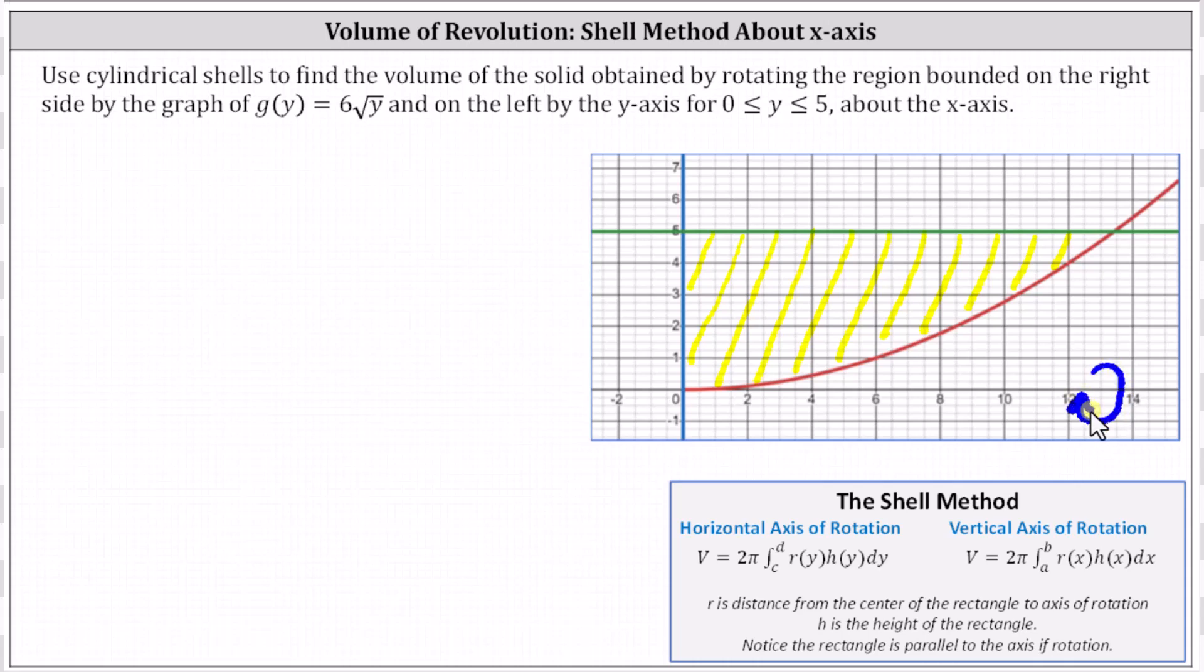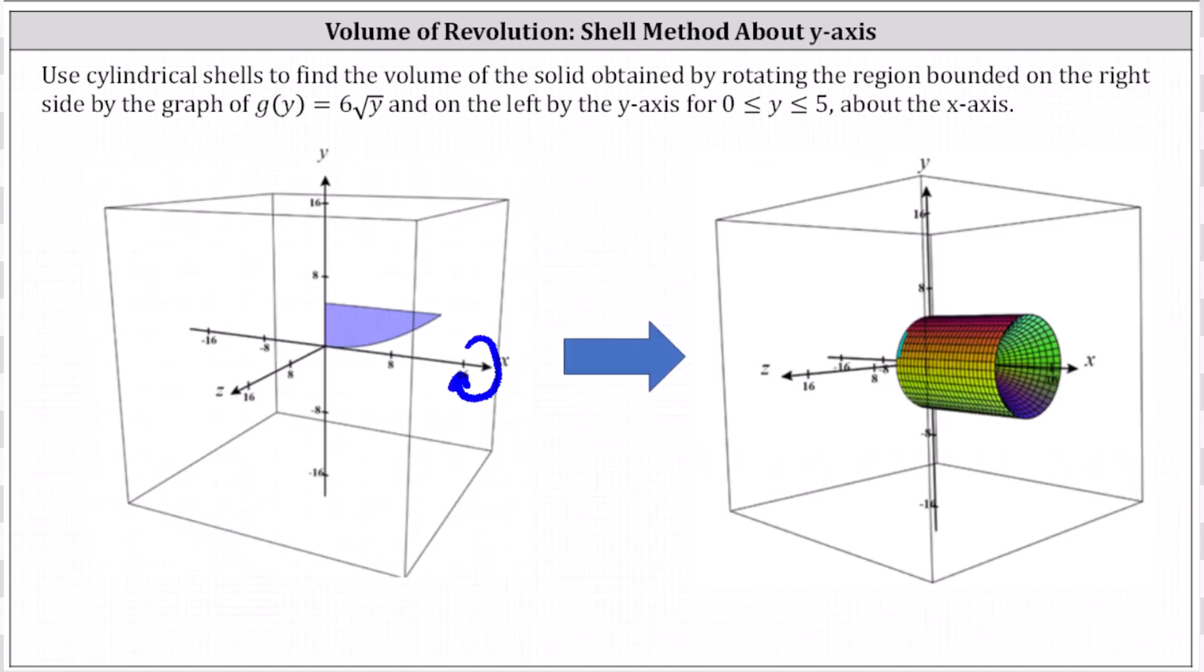Let's first take a look at this in three dimensions. On the left, we have the bounded region R graphed in three dimensions. If we rotate this area about the x-axis, we get the solid shown here on the right, and our goal is to determine this volume using the shell method.